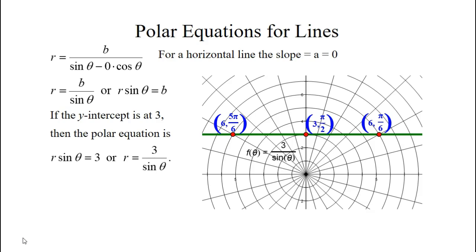At pi over 6 we get 6. At pi over 2 we get 3, our y-intercept. And at 5 pi over 6 we have 6.